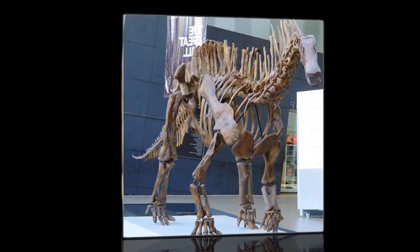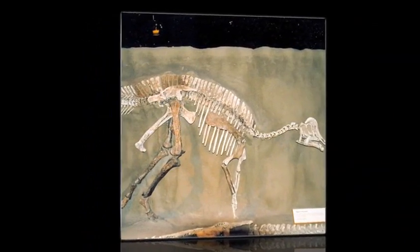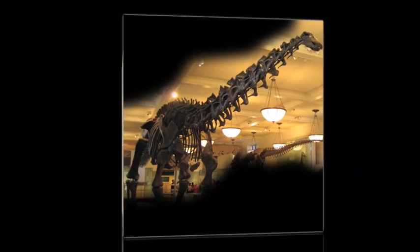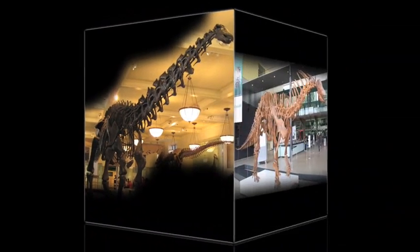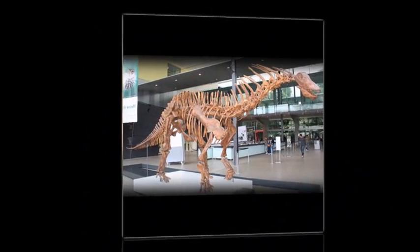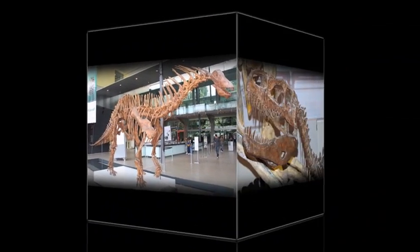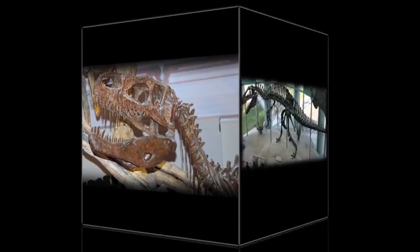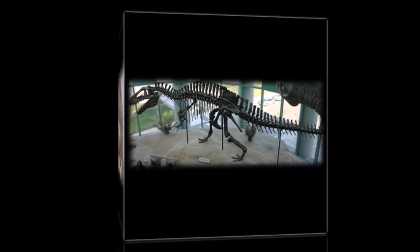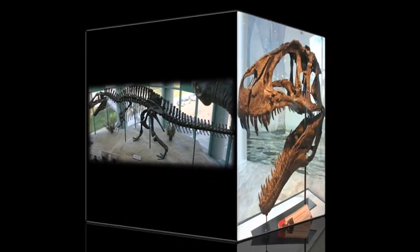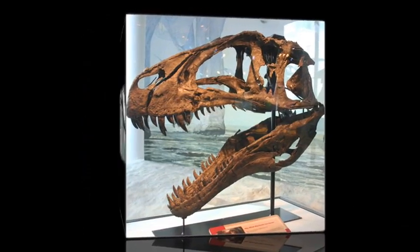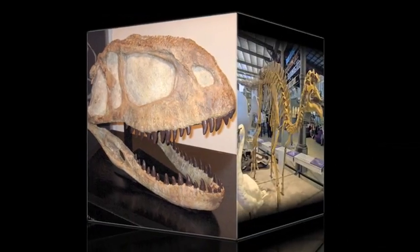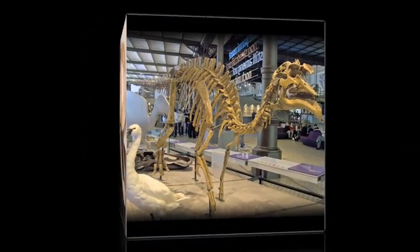From 220 million to 65 million years ago, the large reptiles and dinosaurs dominate the land and sea. Life is varied — there are tens of thousands of species. All extinct today.